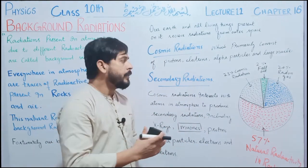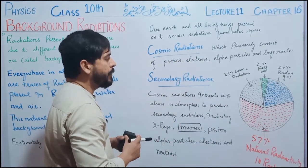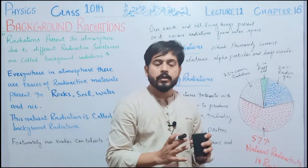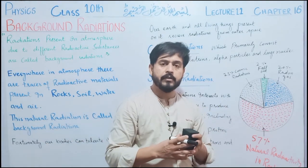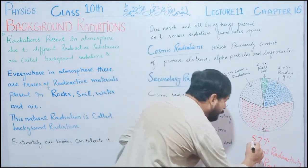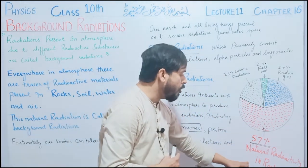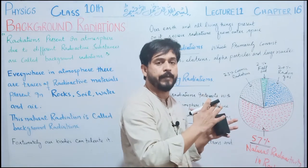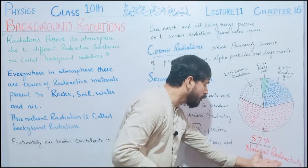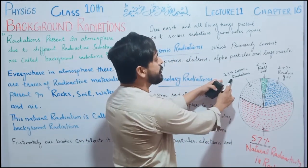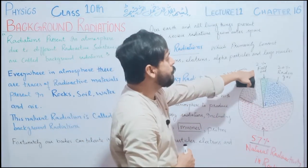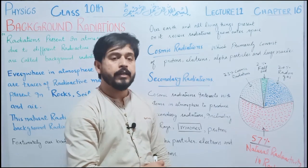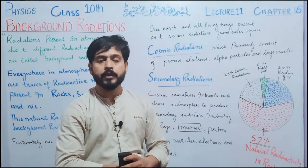ایک diagram بنائی گئی ہے جس میں ہمارے محول کے اندر موجود radiation کو different categories میں represent کیا گیا ہے۔ ہمارے محول میں 57% radiations جو natural radioactivity سے rocks اور soil سے نکل رہی ہیں۔ اس کے علاوہ 21% radiations outer space سے cosmic radiations کی form میں آ رہی ہیں، کچھ 2% fallout outer space radiations کی form میں ہو رہا ہے، اور 20% radiations radon — جو highly radioactive gas ہے — اس سے release ہو رہی ہیں۔